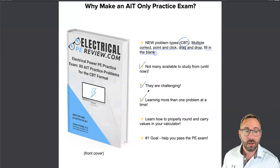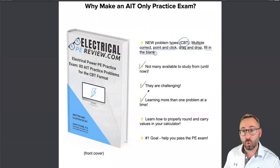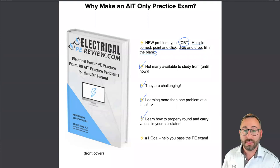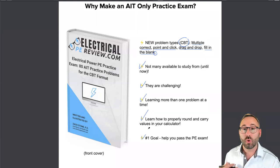You're really going to have to not just understand these concepts, but internalize them in order to answer these problems correctly. Especially the multiple correct — it's no longer an option to select 'D for all of the above.' Any of the choices could be correct and there's no partial credit. If you don't select all of the correct answer choices, you get zero credit for that problem. I'm a big fan of these AIT practice problems — it's a fantastic way to study for the PE exam. The number one goal, always, is to help you pass the PE exam.